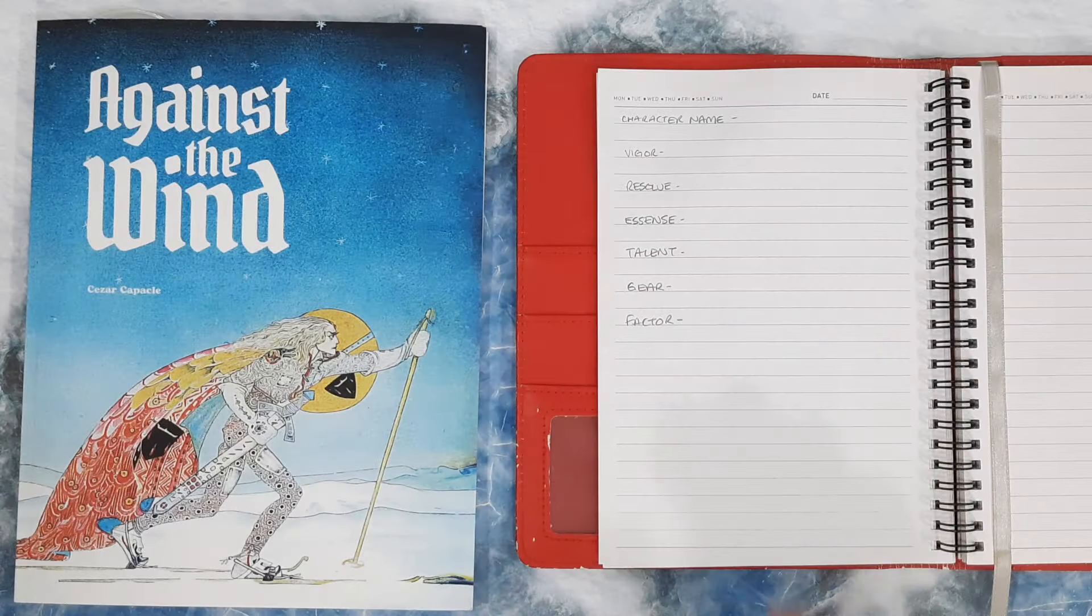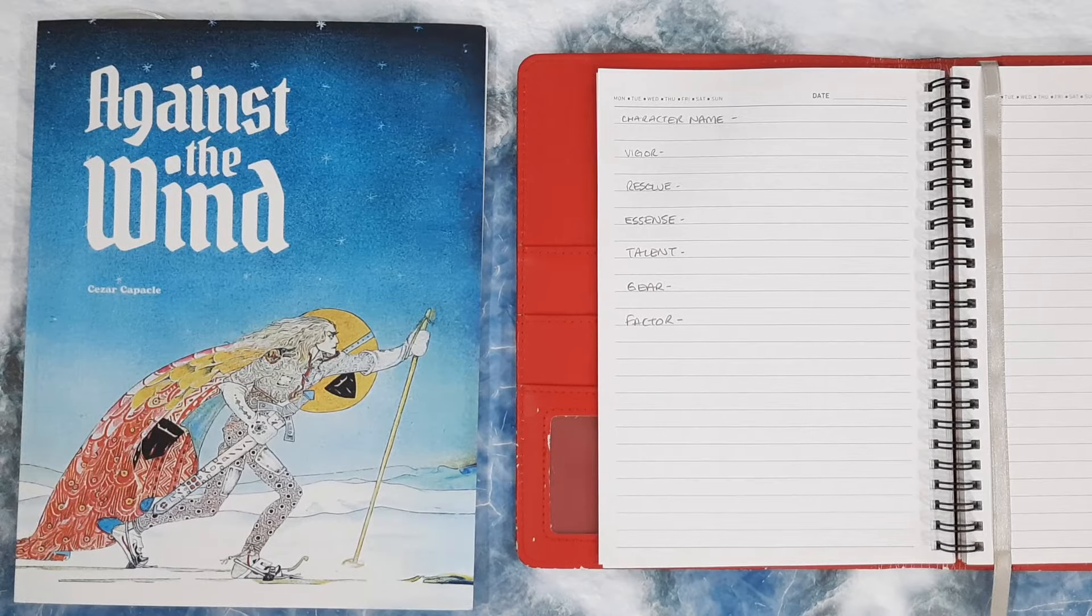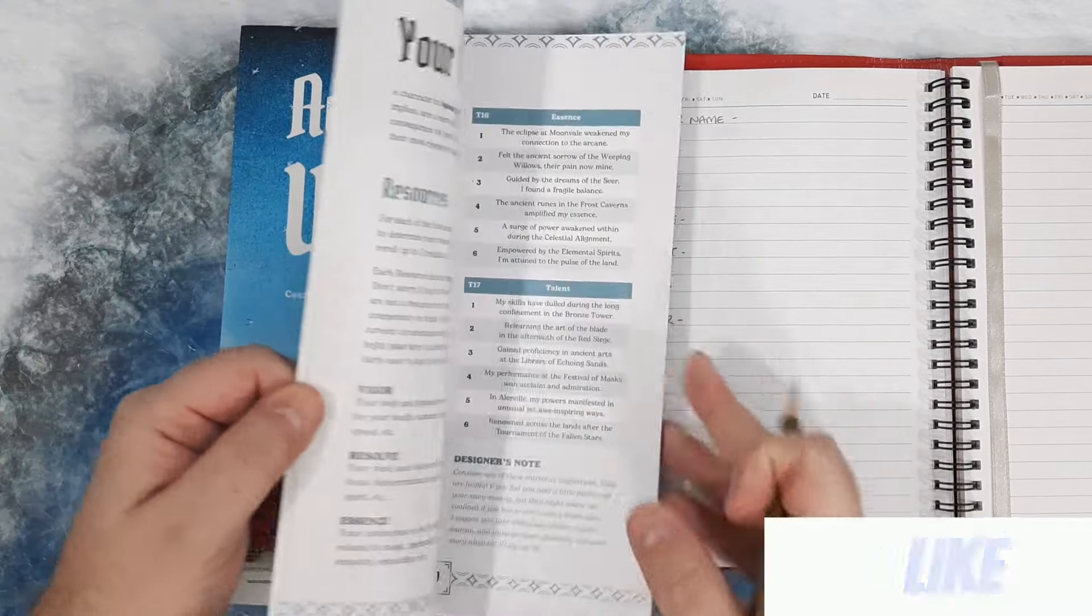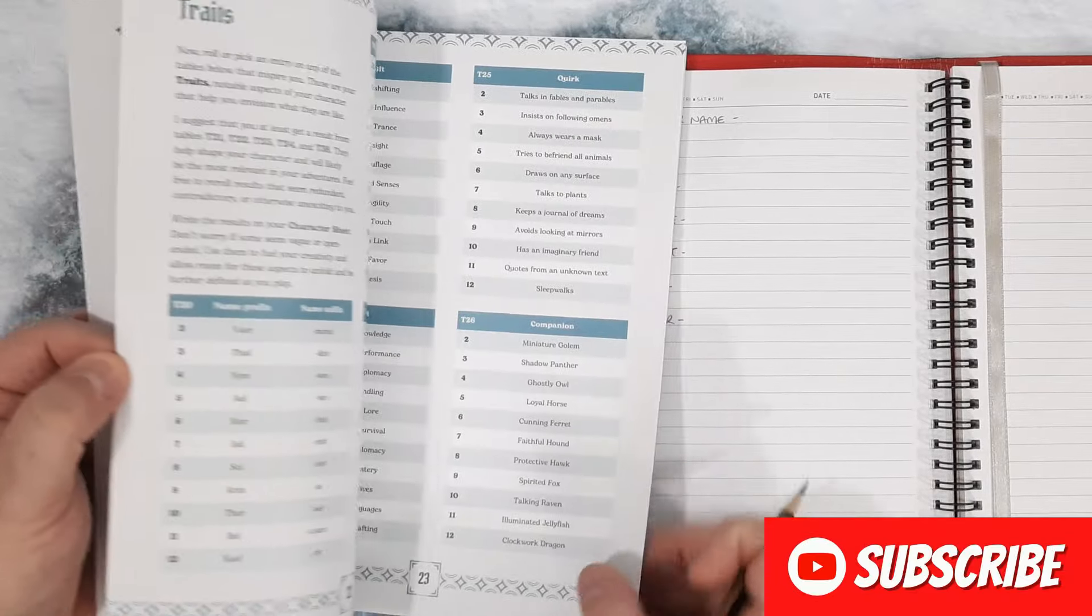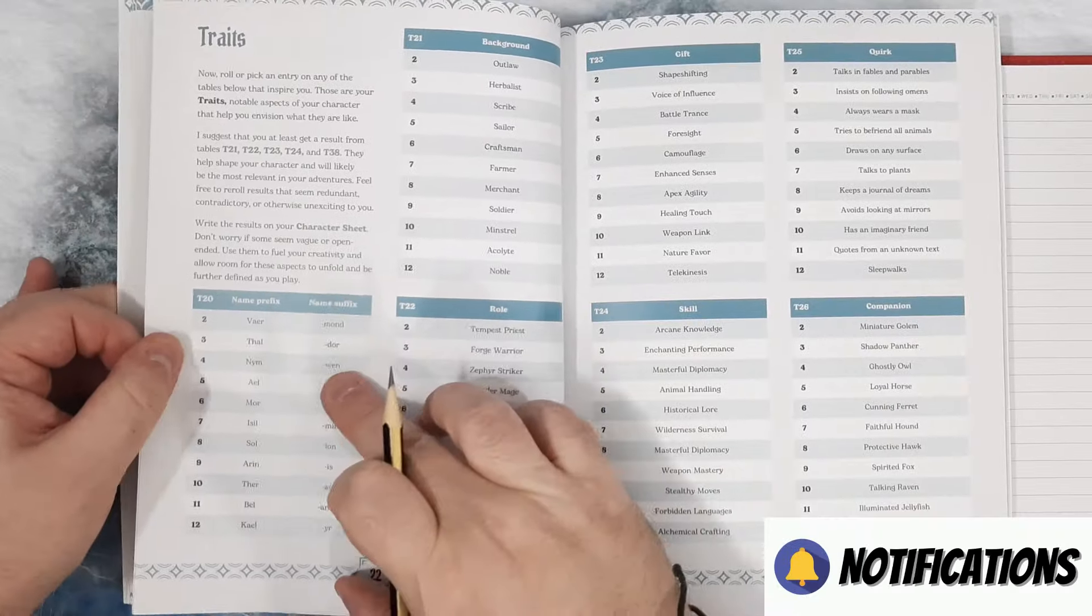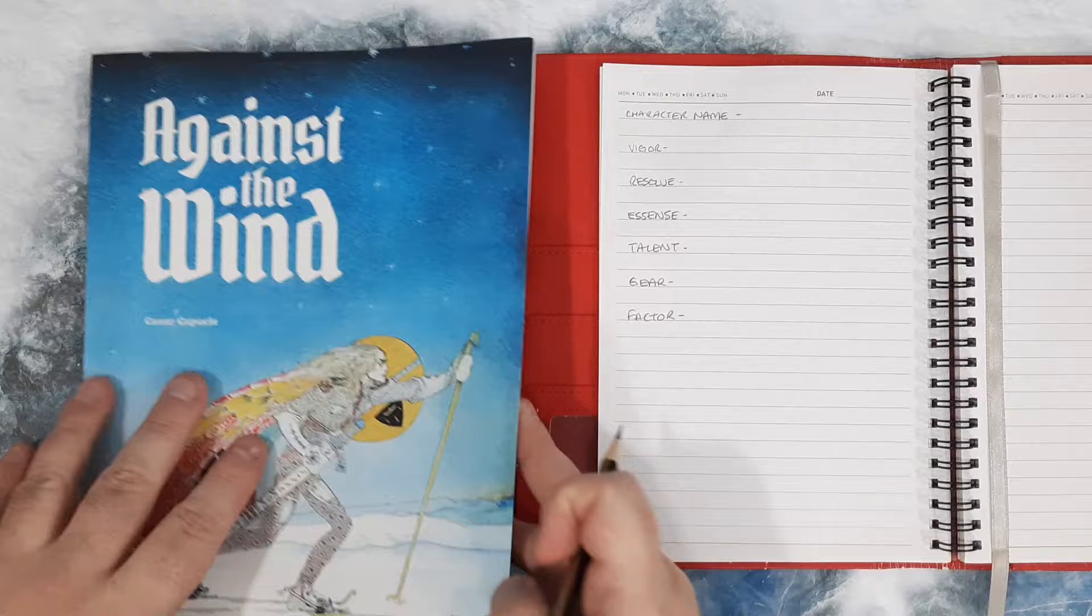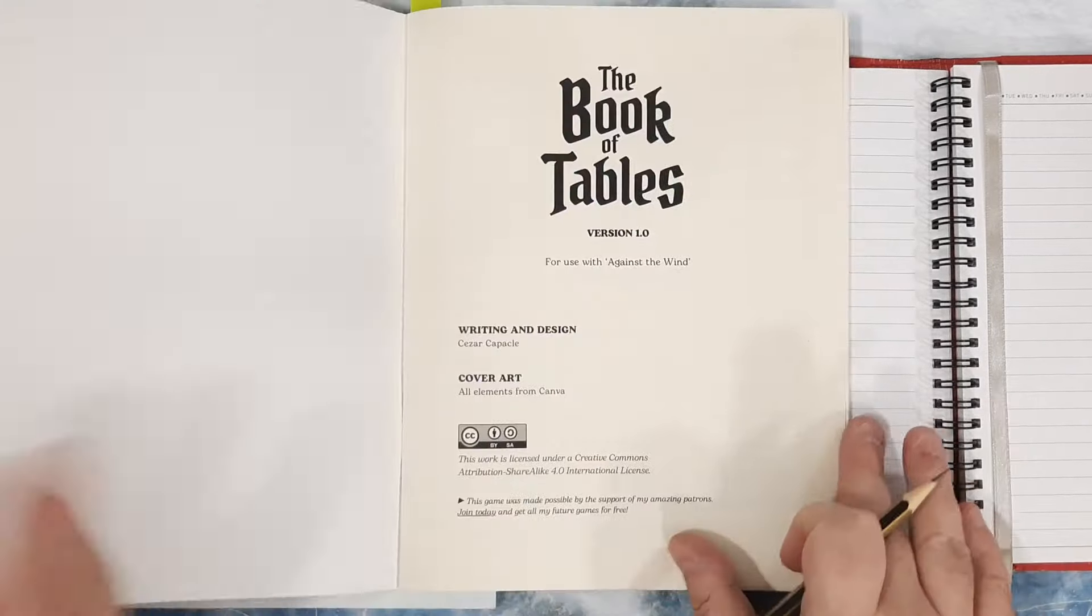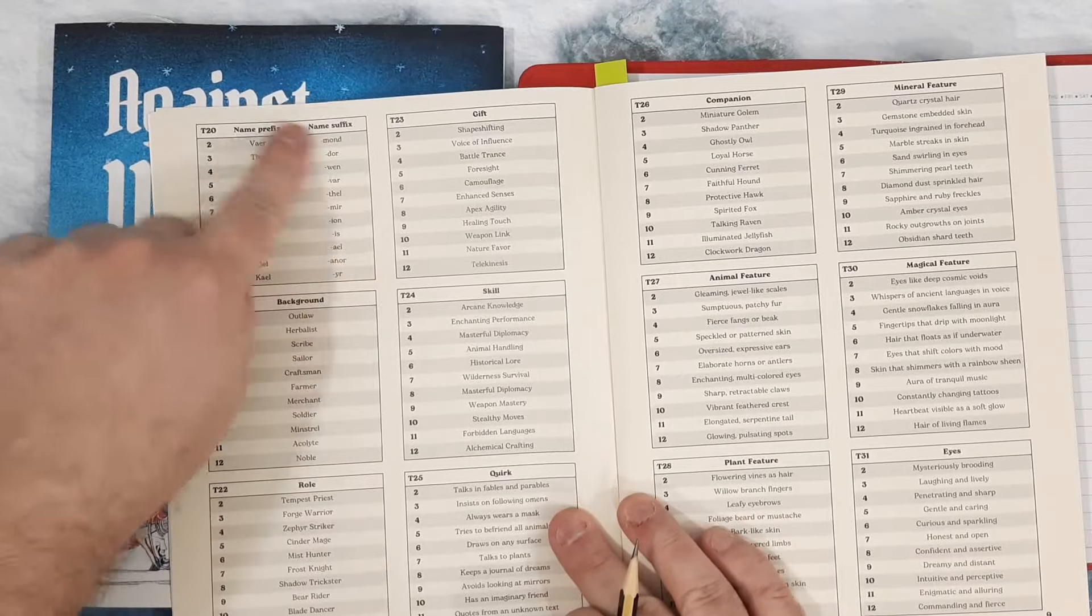Alright, character creation for our Against the Wind playthrough. Now, character name, you can come up with your own or use any kind of online generator, but there is a table actually included where you can create your own random name. And as I've said before, with all the tables, they're all in here as well. There we go, name table.